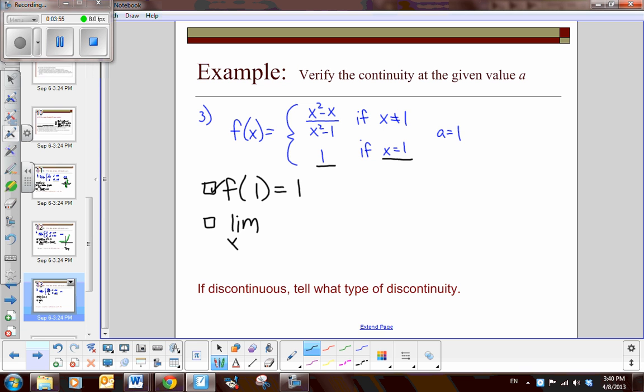Next piece: is there a limit as I approach 1 of this function? As I approach 1, let's look at this rational function. If I substitute 1 at this point, I get 1 minus 1 in the denominator, which is 0. So let's try to work a little more. I can factor all over x plus 1, x minus 1. This reduces out, so I have x over x plus 1. The limit, if I substitute 1 in, would be 1 over 1 plus 1, which is 1 half.